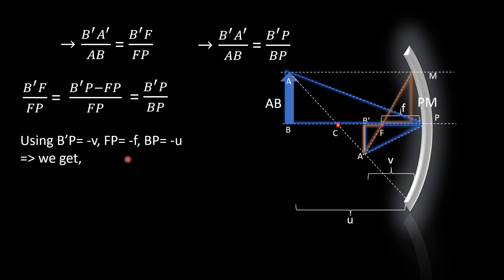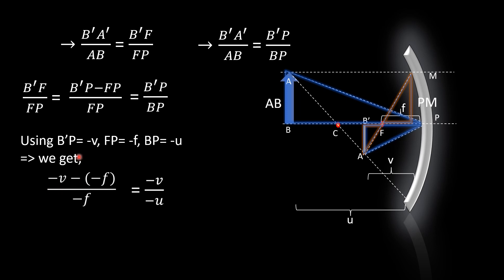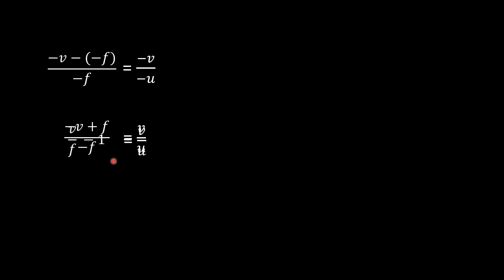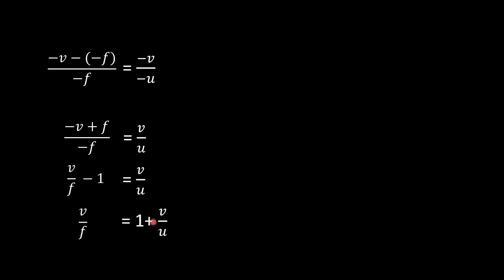After further simplification, minus into minus becomes plus. The minus terms are cancelled. We get plus f divided by minus v. Shifting terms, minus f gives minus 1. After simplification, we get 1 plus v divided by u, leading to the mirror equation: 1/f = 1/v + 1/u.